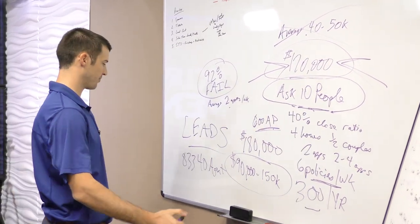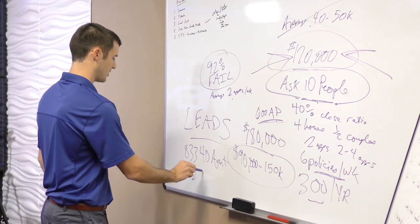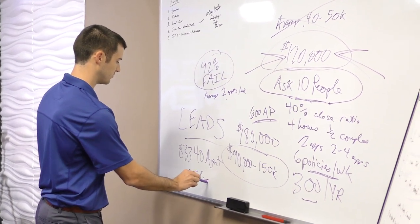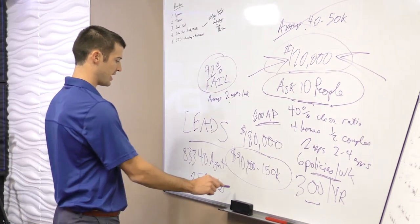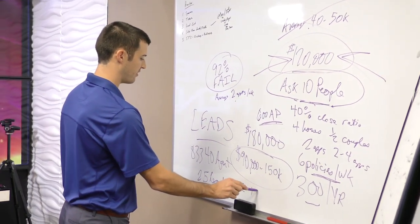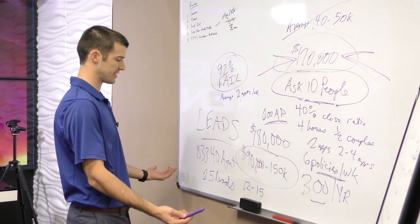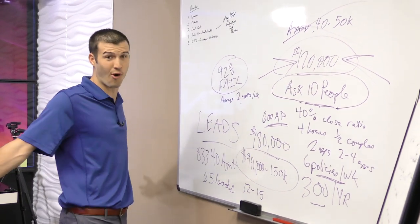You say, well Cody, I want to see 10 people. Okay. Then buy 25 leads. Have 25 leads to work. You should set about 12 to 15 of them as appointments. Say, well Cody, I suck on the phone. Buy 30. Just do more.